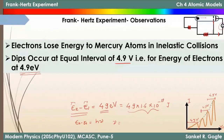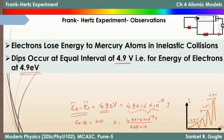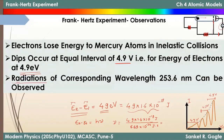The frequency of the photons emitted during de-excitation can be calculated using E = hν, where ν is the frequency. So ν = (4.9 × 1.6 × 10⁻¹⁹) / h, where h is Planck's constant (6.626 × 10⁻³⁴ J·s). You can use a calculator to find the exact frequency of the light emitted. These radiations with this particular frequency can actually be observed experimentally.